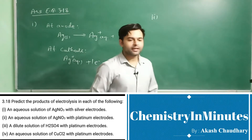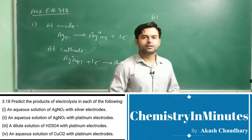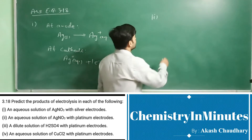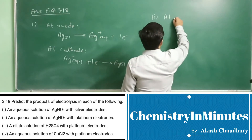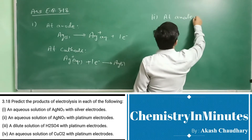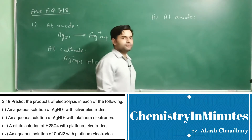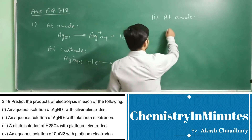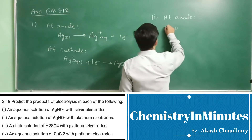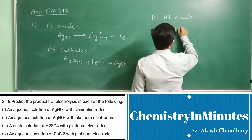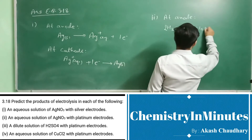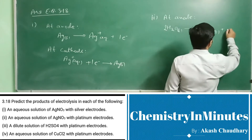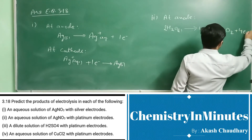In the second part, an aqueous solution of AgNO3 with platinum electrodes. At anode, since platinum electrodes are inert, oxidation of water will take place: H2O(l) → 4H⁺(aq) + O2 + 4e⁻.